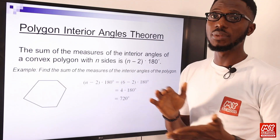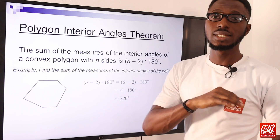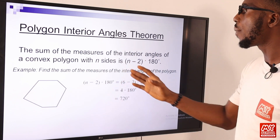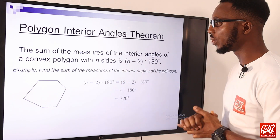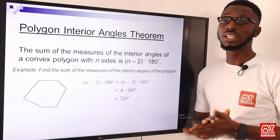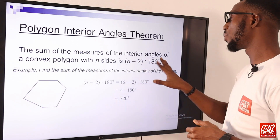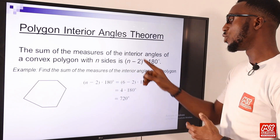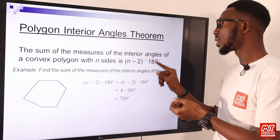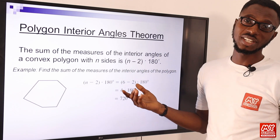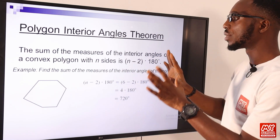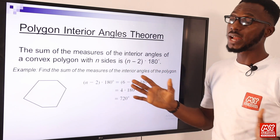We have certain theorems to be familiar with regarding polygons — regarding interior and exterior angles. The sum of the measures of the interior angles of a convex polygon with n sides is (n − 2) × 180°. Some presentations express this as (2n − 4) × 90°, which is the same thing: if you expand (n−2) × 180, you get 2n × 90 − 4 × 90, giving the same result.